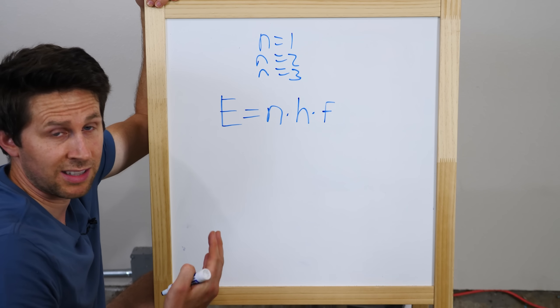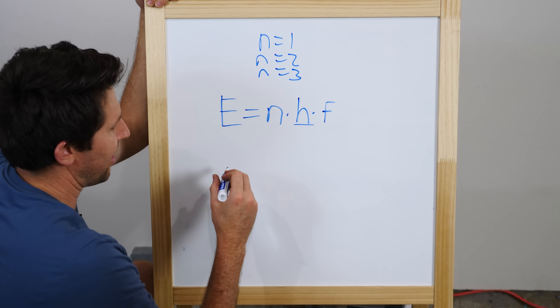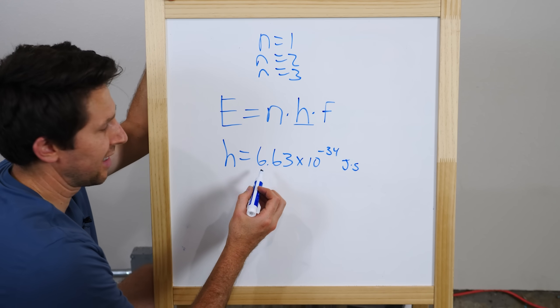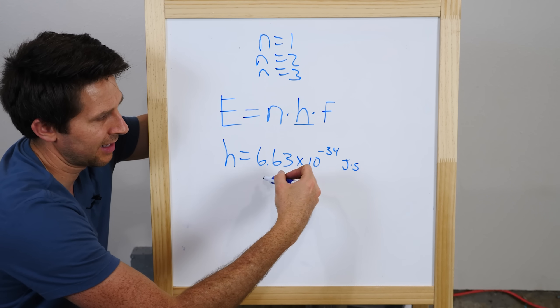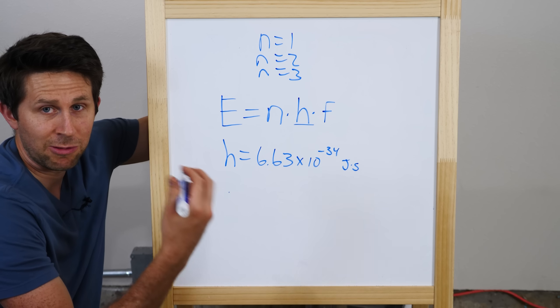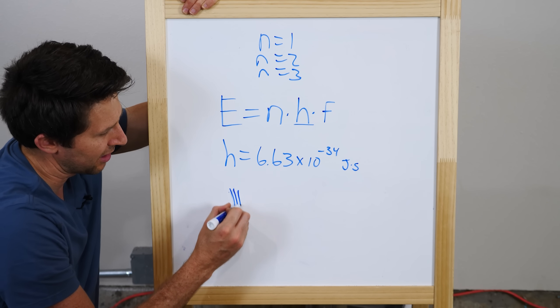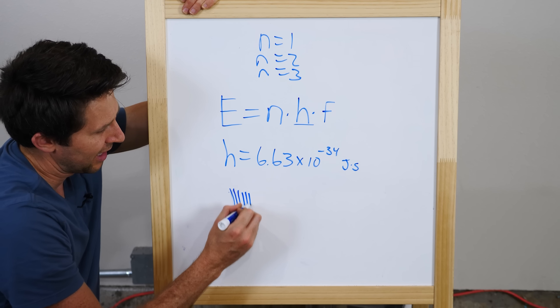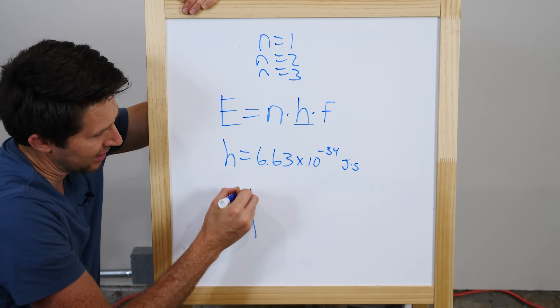So the reason we don't notice this on a large scale is because of how small this Planck's constant is. H is actually 6.63 times 10 to the negative 34 joule seconds. So this is an extremely small number. And what that means is that on a large scale, even though there are these quantized energy levels, if you zoom out and look really far away, it basically just looks continuous.